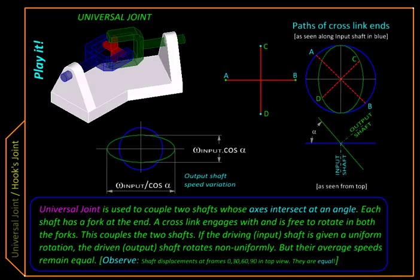Here we are going to look at one special coupling or joint that is used for connecting two shafts meeting at a point at some angle, so that motion of one shaft is transferred to the other. Let us see its construction.